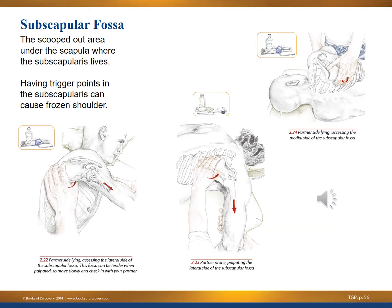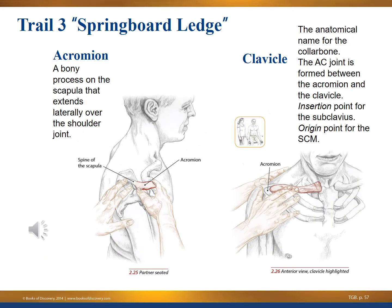Fossa means a scooped-out area. The subscapular fossa is the scooped-out area under the scapula where the subscapularis lives. Having trigger points in the subscapularis can lead to frozen shoulder. The easiest way to access it is while the client is in side-lying position, though there is also a technique in supine. Trail Guide to the Body calls this trail three: the springboard ledge.